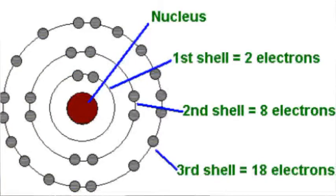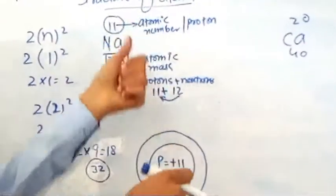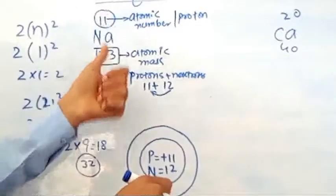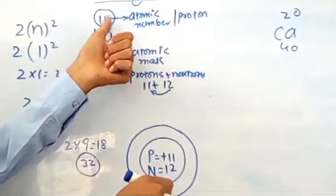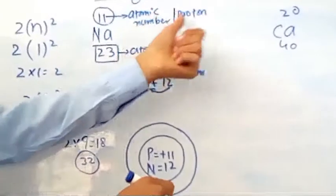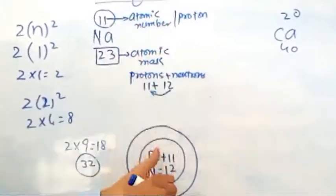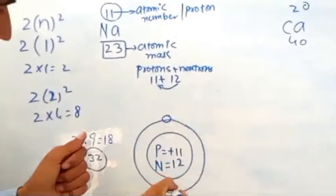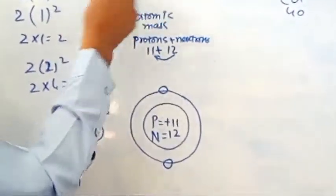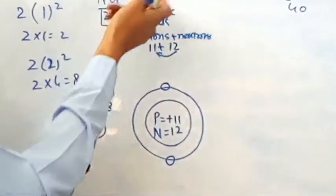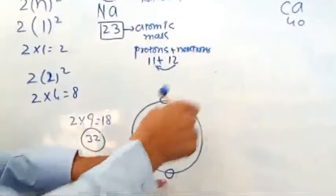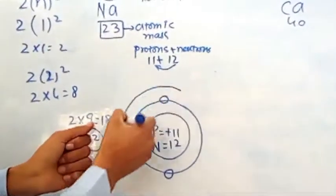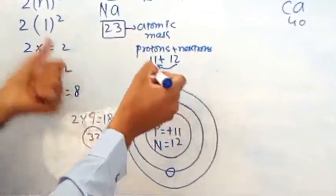So sodium has 2 electrons in the first shell. As we know, each atom has the same number of protons and electrons. Sodium has 11 protons, so sodium has 11 electrons. The first shell contains 2 electrons, and the second shell contains 8 electrons.